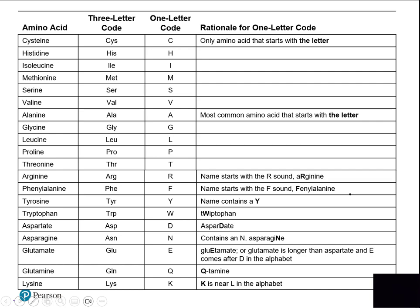Amino acids can be written a few ways: by their full name (cysteine, histidine, isoleucine, methionine, serine, valine, alanine, glycine), by a three-letter code (Cys, His, Ile, Met, Ser, Val, Ala, Gly), or even by a single-letter code. The three-letter code is commonly used in DNA and protein synthesis discussions. All these abbreviations refer to the same amino acid — just shorter versions of the name.